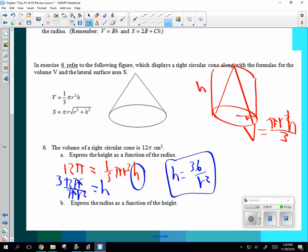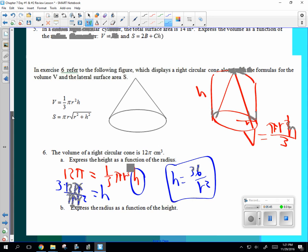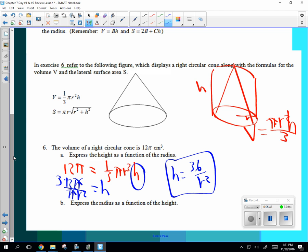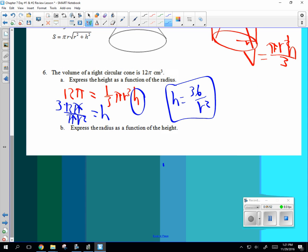Now it says express radius as a function. We did that. Express the height. Oh, is that serious? Is that all you do for B? Oh, cool. Cool. So all I'm going to do is multiply by three. So I get 12 pi times three equal to pi R squared times H.